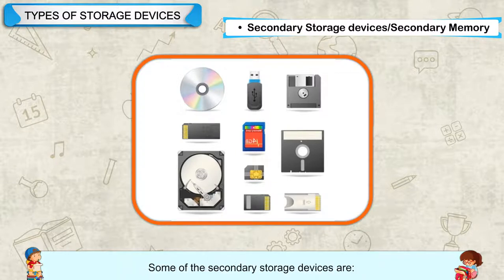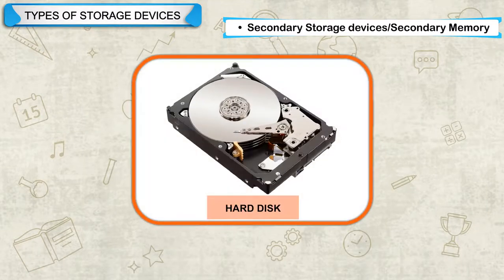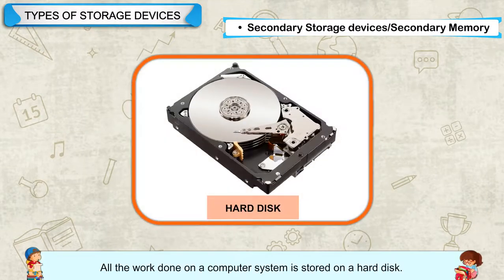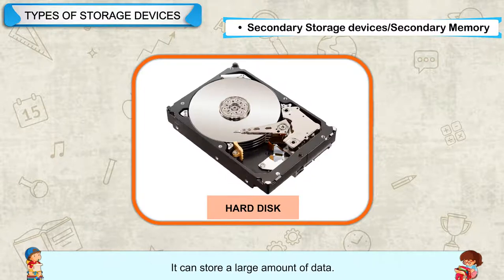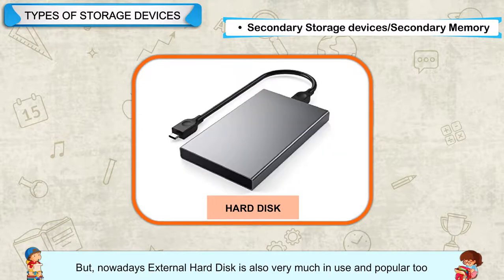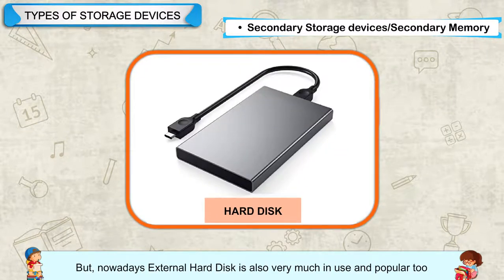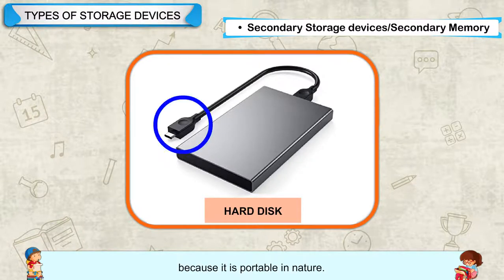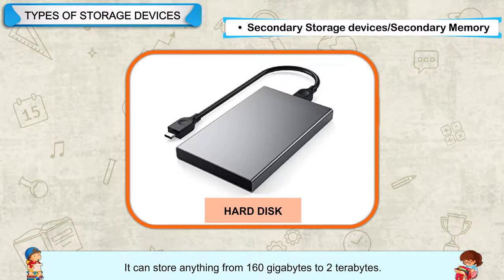Some of the secondary storage devices are: Hard Disk — all the work done on a computer system is stored on a hard disk. It can store a large amount of data. The hard disk is present inside the CPU box, but nowadays external hard disks are also very much in use and popular because they are portable. It can store anywhere from 160 GB to 2 TB.